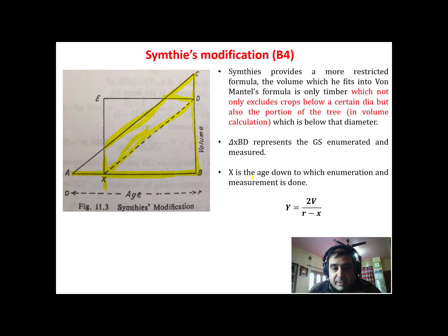So ultimately the formula becomes: yield is equal to twice the enumerated growing stock upon r minus x, where r is the rotation and x is the diameter up to which the tree enumeration is done, as well as the portion below x is not accounted for the estimation of total growing stock.